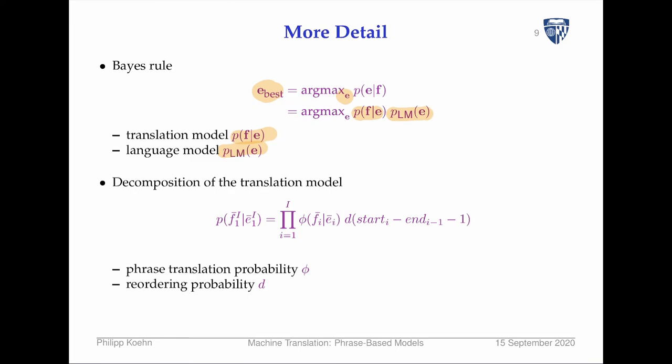The language model we talked about at length previously. The translation model we're going to break up as follows. This is now a phrase-based model, so the idea is that the sentence F is broken down into a sequence of phrases, with I being the number of phrases.